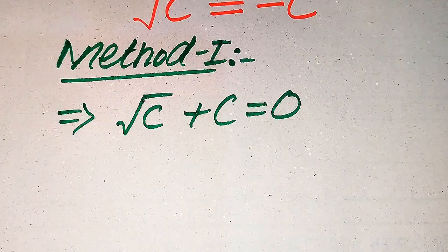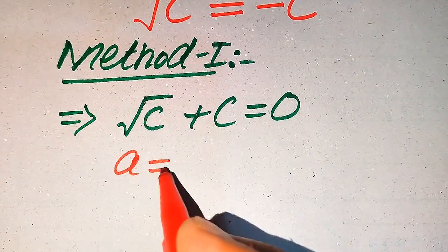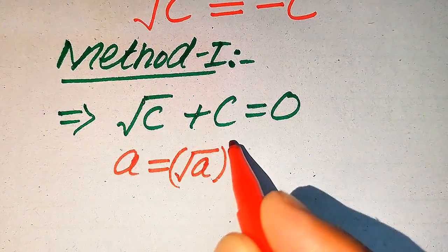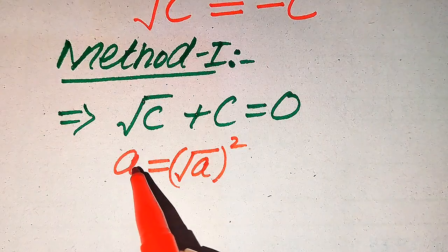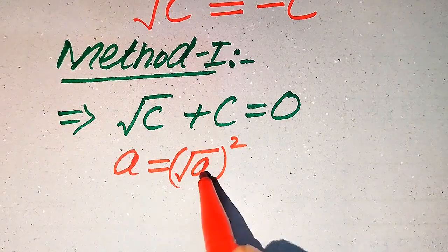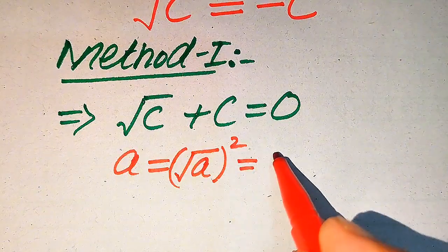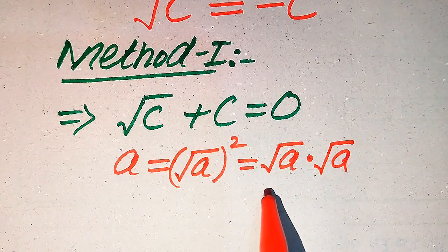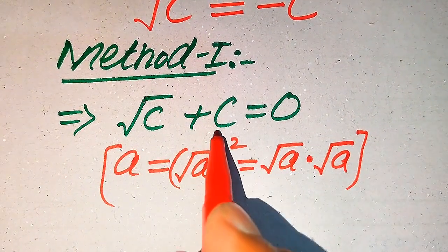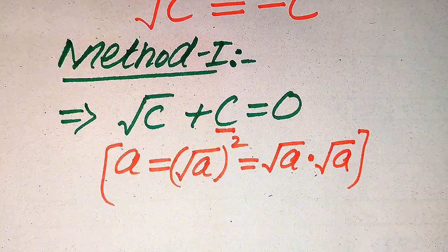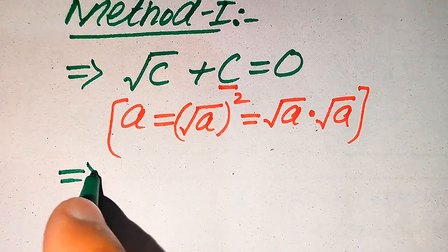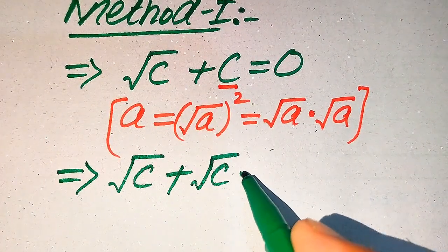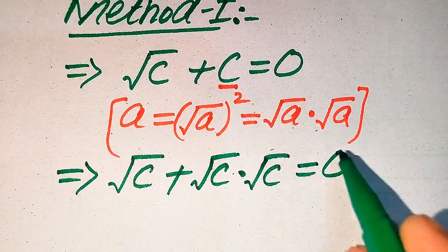You know that if we have A, we can write A as (√A)² = √A · √A. According to this rule, we write C in the form of √C · √C. So we get: square root of C plus square root of C multiplied by square root of C equals 0.